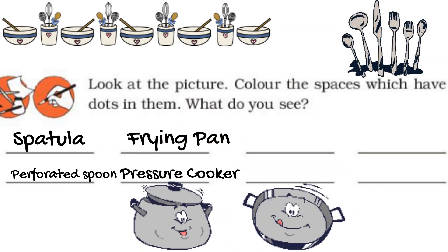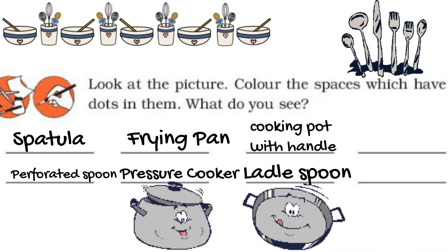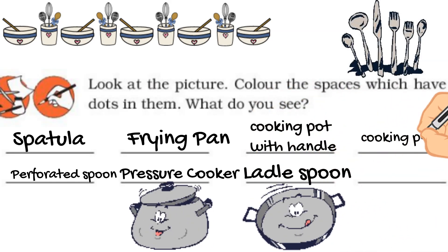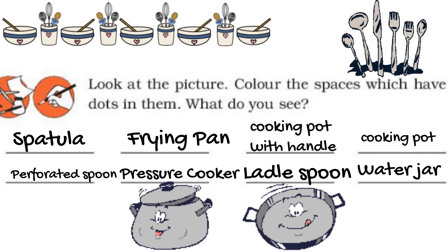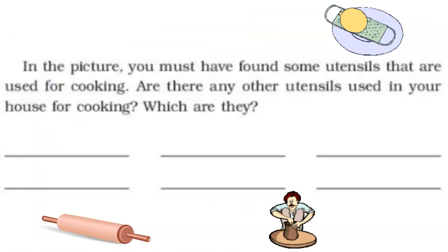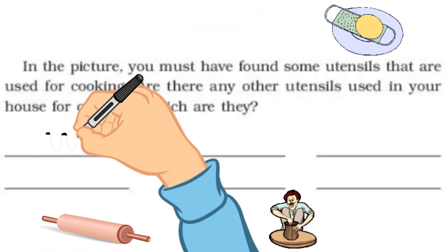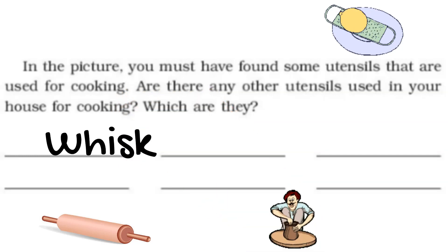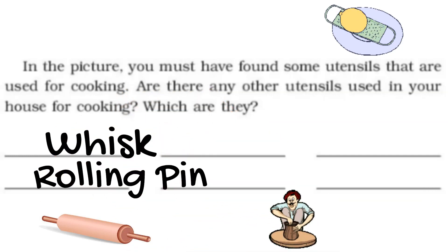You can see three different frying pans — one is flat, another is with a handle, and another is without a handle. There is also a cooking pot, which we can call a cooker. Another utensil you can see here is a pitcher, which we use for water storage.